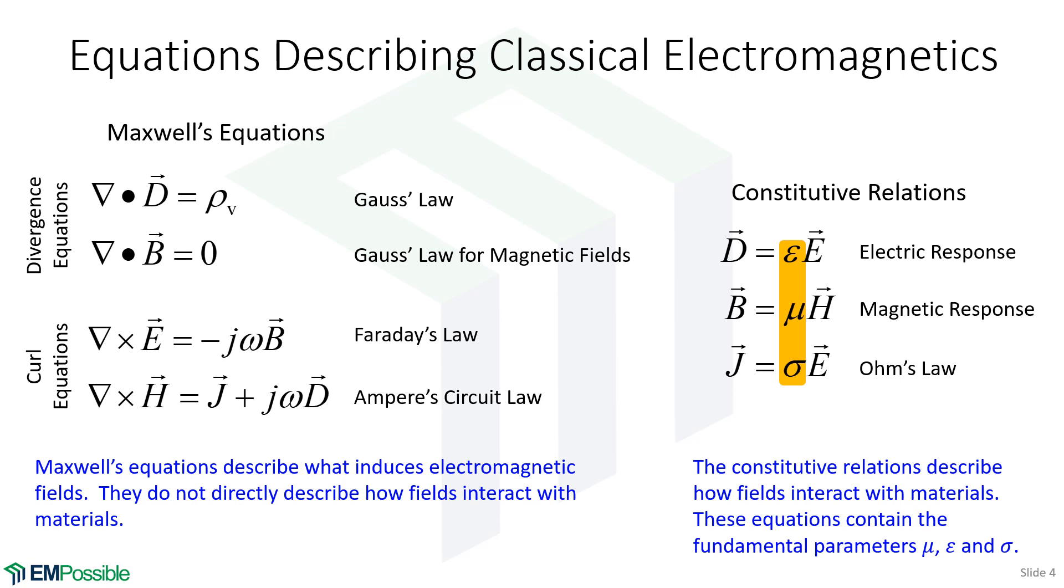But fortunately, there's a different set of parameters that are much more intuitive. And we calculate those from mu, epsilon, and sigma. And so I'll call those the intuitive parameters. But the fundamental parameters, these are the fundamental things. I just can't look at values assigned to those and tell you much about what's happening to the electromagnetic fields.